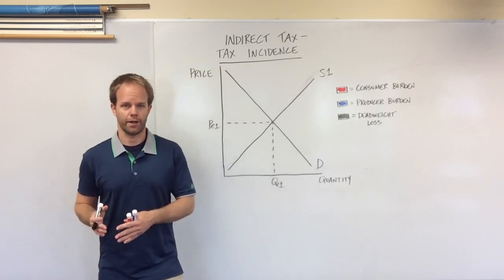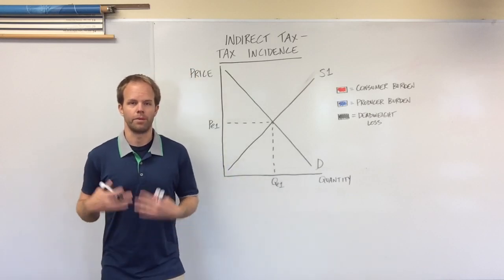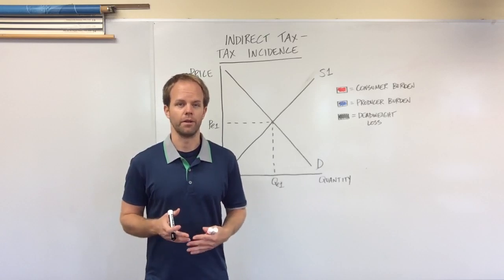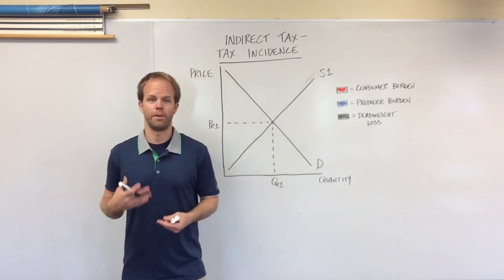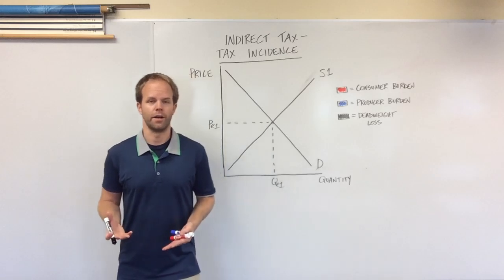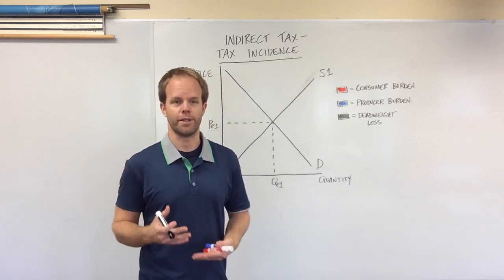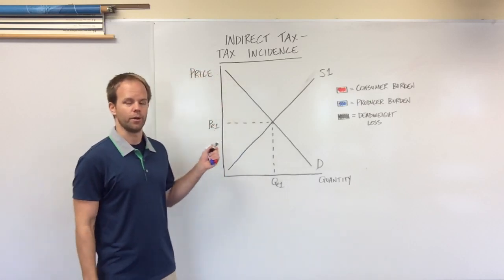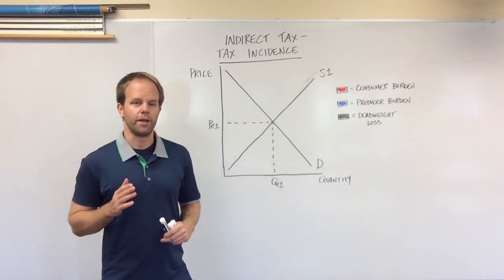A direct tax is when the taxpayer pays their money and taxes straight to the government. That's probably going to look like income taxes — the biggest direct tax — but also property taxes, taxes on wealth, assets, and income. Those are all direct taxes. It's important to note that direct taxes decrease demand; they don't decrease supply. But here we're talking about an indirect tax.